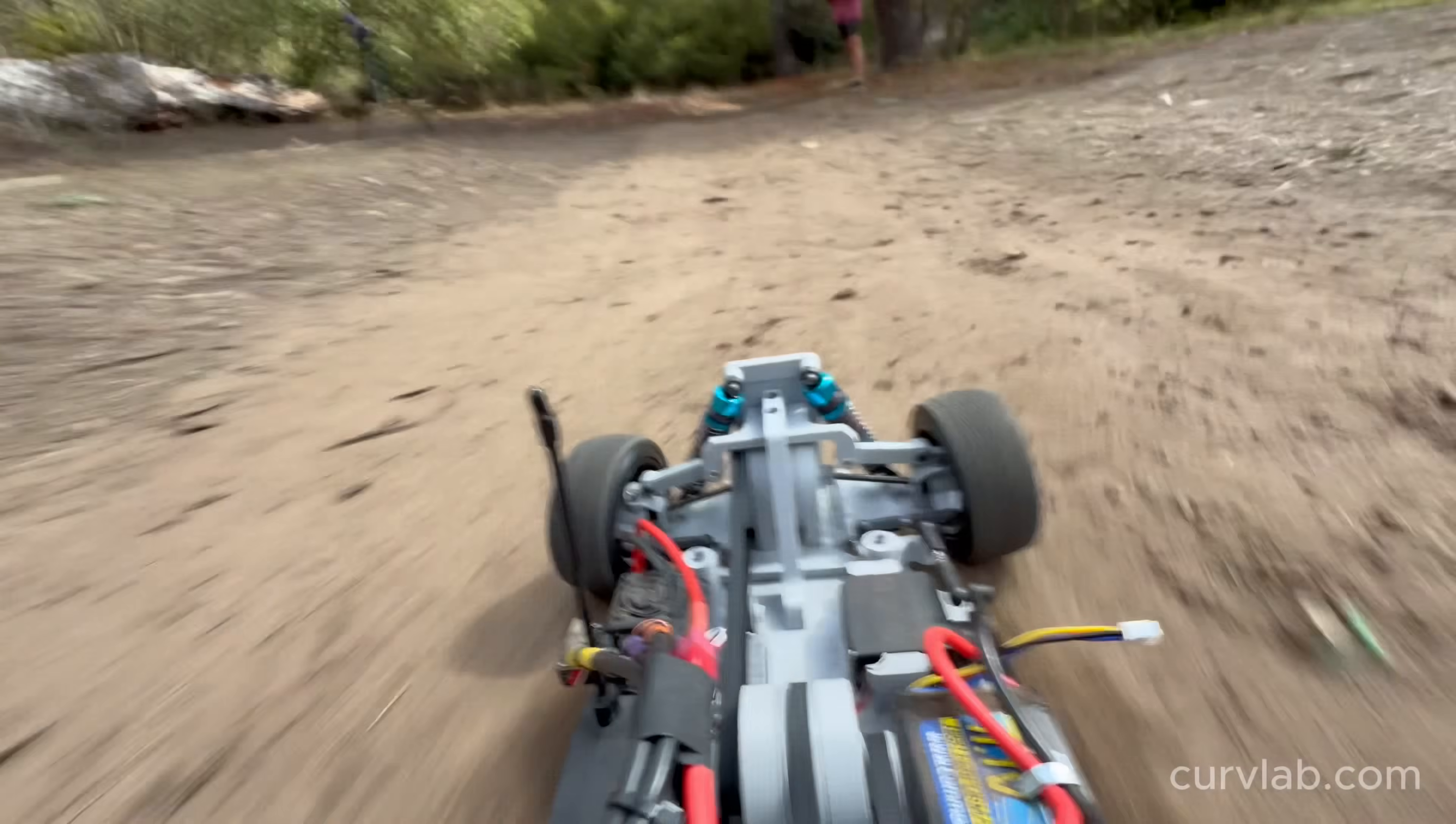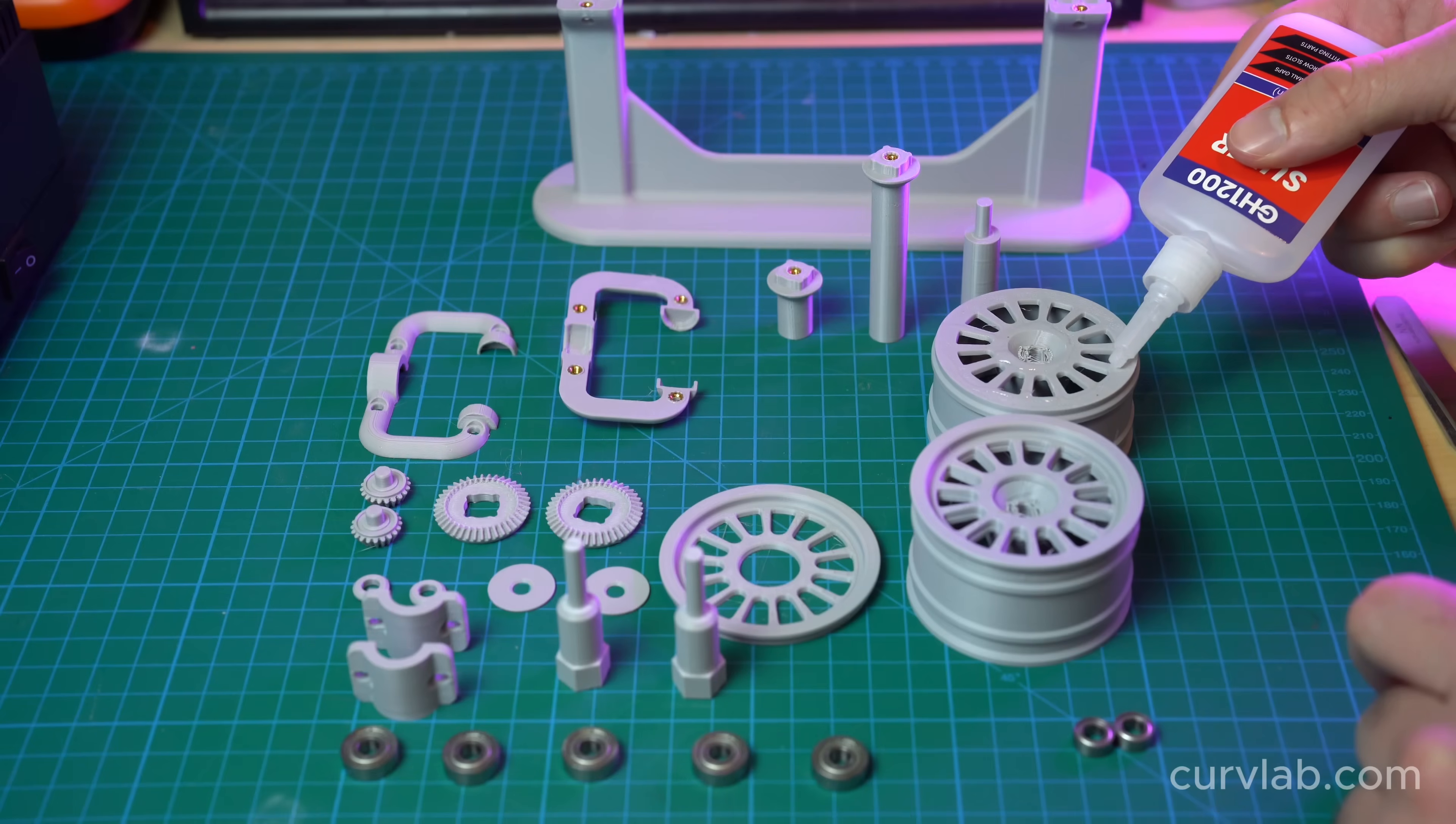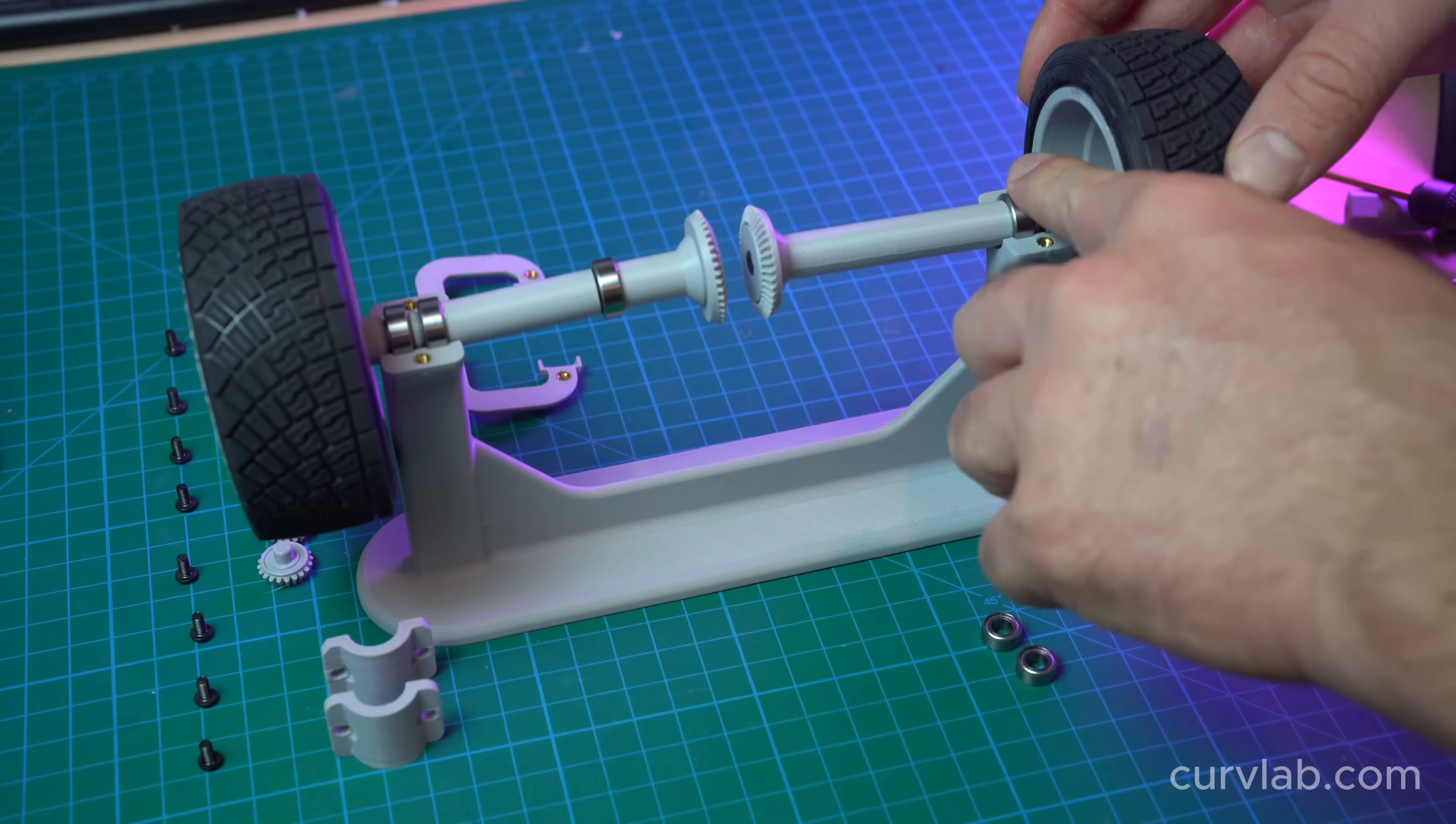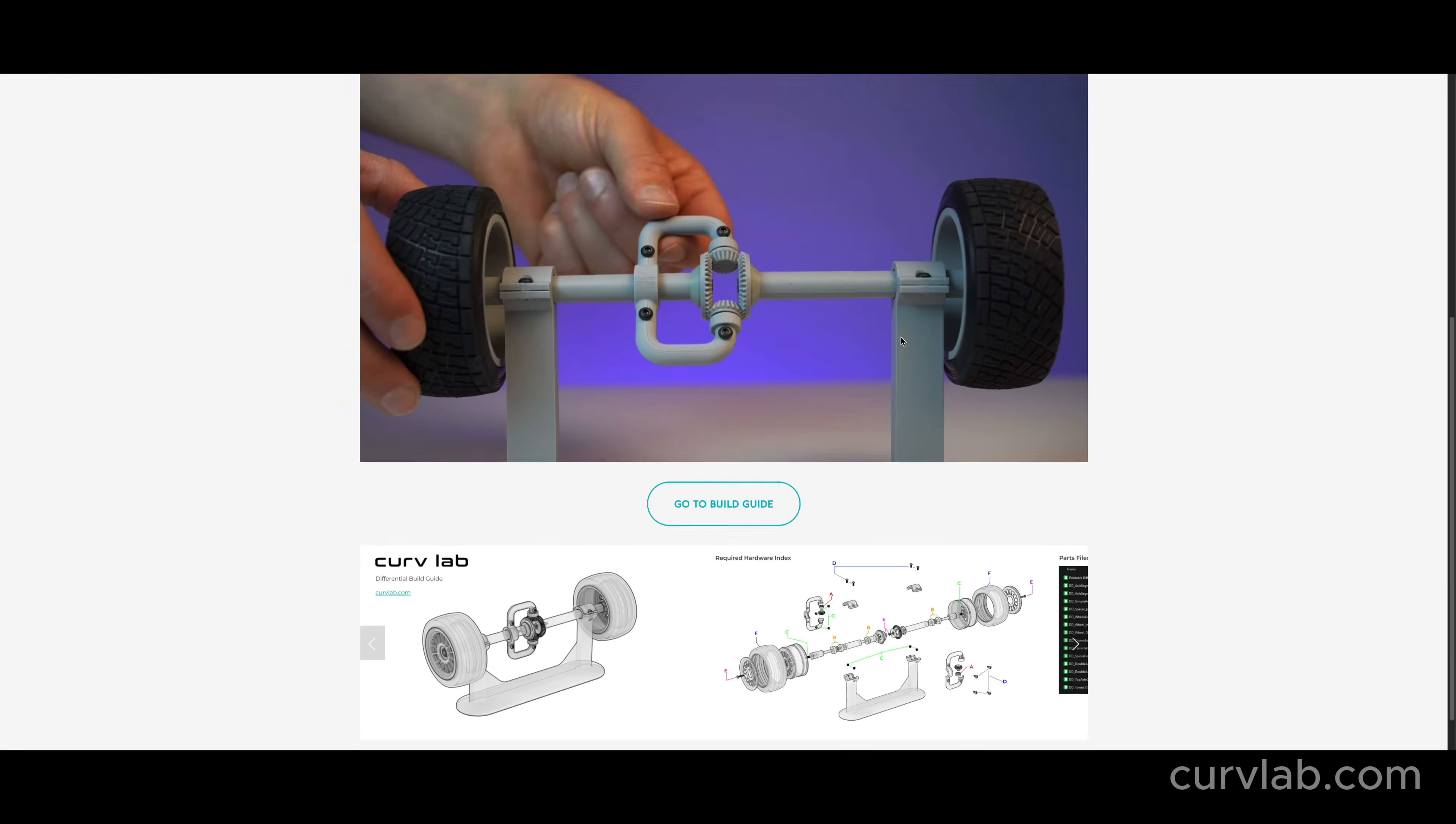It's crazy how effective building this little demo model and actually turning it over in my hands was for really building an intuitive grasp of how a differential works from first principles. For me, I'm kind of a kinesthetic and visual learner. So just being able to rotate the gears in my hand and move the wheels around is how I build intuitive understandings of really complex concepts.